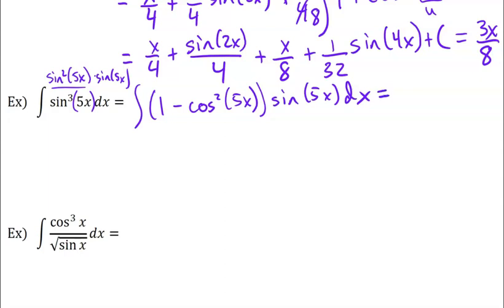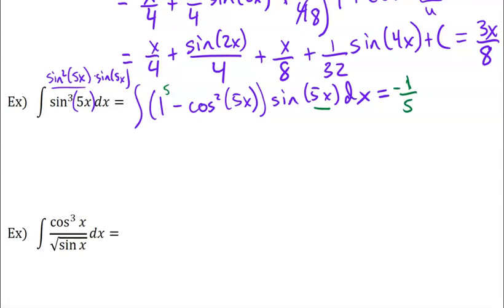So the integral of 1 times sine of 5x — my u is 5x, my du is a 5, so I'm going to multiply by 5 on the inside and divide by 5 on the outside. So I have 1/5 and then the integral of sine u would be negative cosine u, so it's negative 1/5 cosine of 5x. If you need to write out another step with the u-substitution, go ahead and do that.